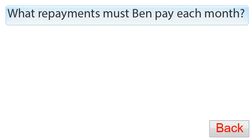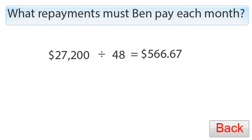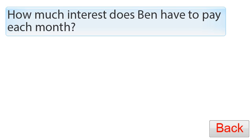To find Ben's monthly repayment, he needs to pay off a total of $27,200 over 48 months so that he owes nothing more to Loans For Us. We divide $27,200 by 48, and that gives us the amount he has to pay each month.